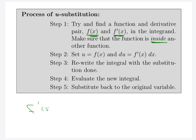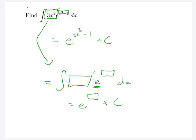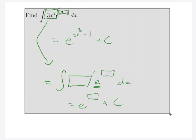Since the derivative of u is really du over dx, we can multiply dx on both sides, and we get du equals f prime of x times dx — the derivative part with the dx differential tacked on. Once we've found those two pieces, we substitute them in: we take the function part — x cubed minus 1 in our example — and replace it with u. Then we look at our derivative, our 3x squared dx, and replace that with du. So let's go back to our example.